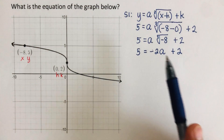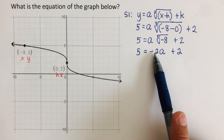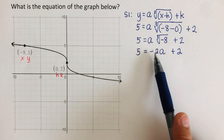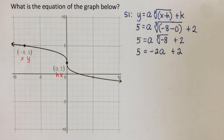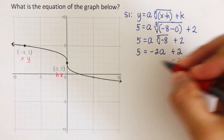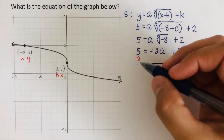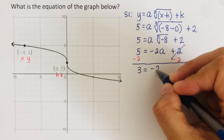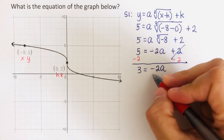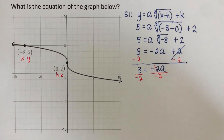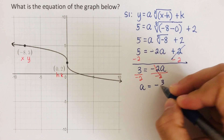The cube root of negative 8 is negative 2 because negative 2 times negative 2 is positive 4, and positive 4 times negative 2 is negative 8. To solve for a, we subtract 2 from both sides, leaving 3 equals negative 2a. Dividing both sides by negative 2, our a value is negative 3 over 2.